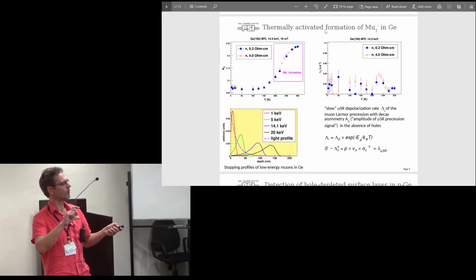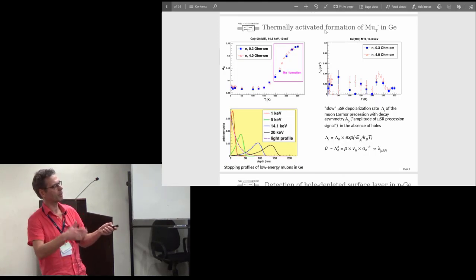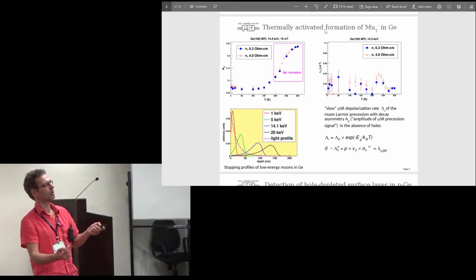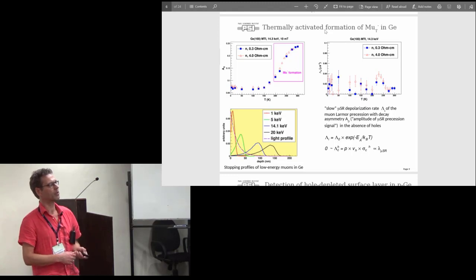If all muonium is ionized you would expect to measure such an asymmetry of 0.24. Here there is a sizable muonium fraction, and above 150-200 Kelvin there's this increase which from other measurements one knows is due to the formation of this muonium minus state. Since we have no holes here, there's no reaction which drives the system back into the neutral state, therefore the depolarization is very small. In these units, 0.02 inverse microseconds, this is a nearly undamped signal in this 10 microsecond time window.